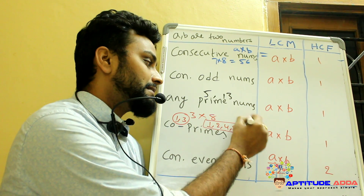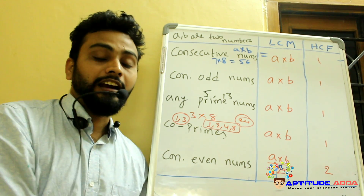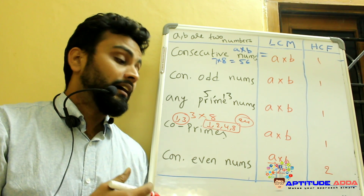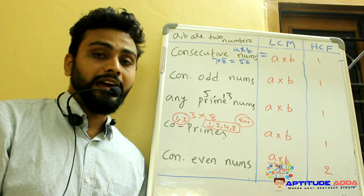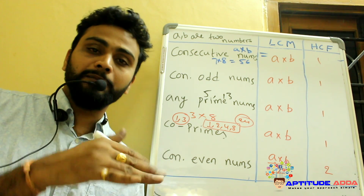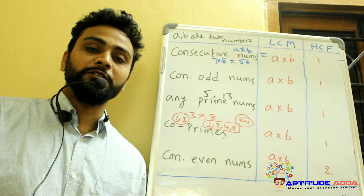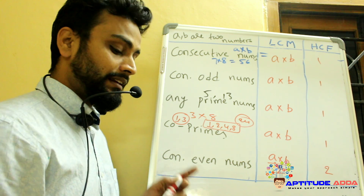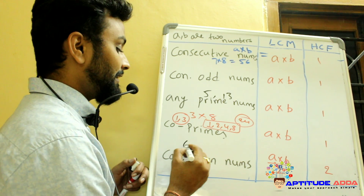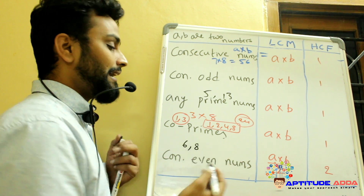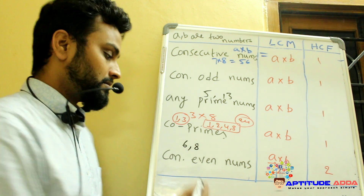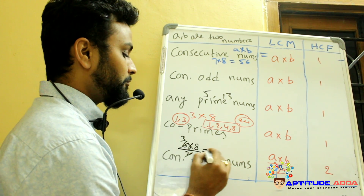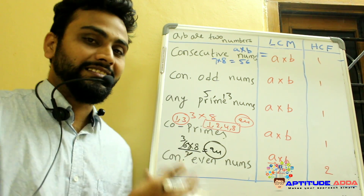LCM of two co-primes is the product of the two numbers — 24 is LCM of 3 and 8. And finally, if the two numbers are consecutive even numbers, then half of their product will be the LCM. We already observed one example: 6 and 8 are consecutive even numbers, and half of their product, 24, is the LCM.